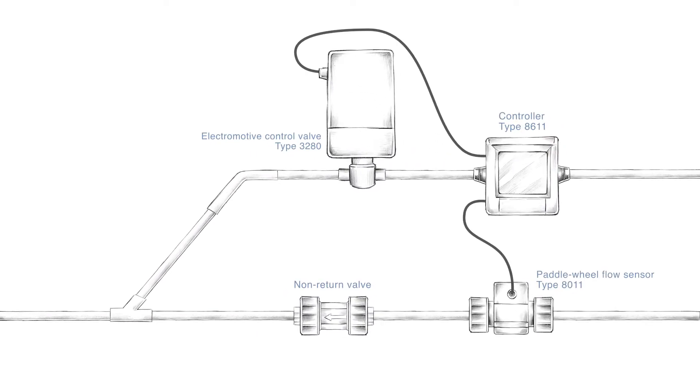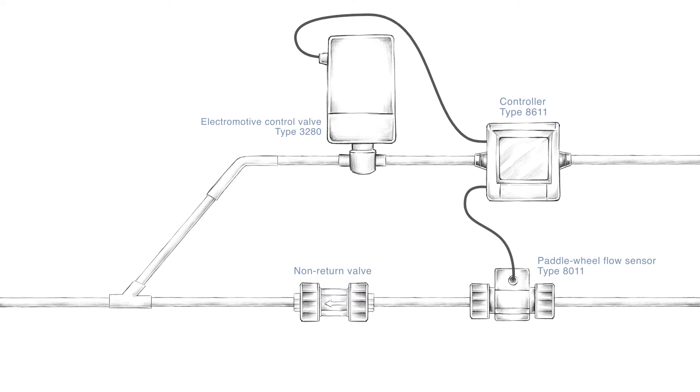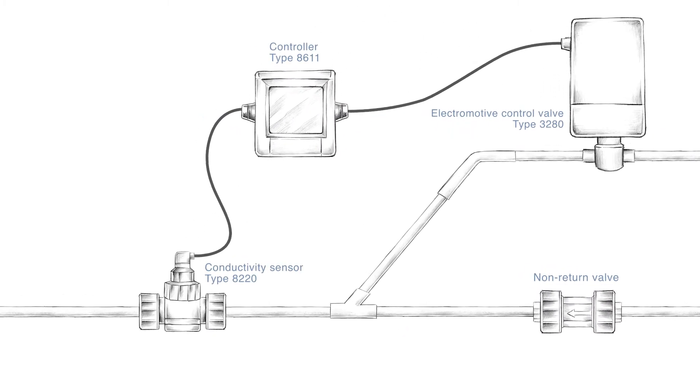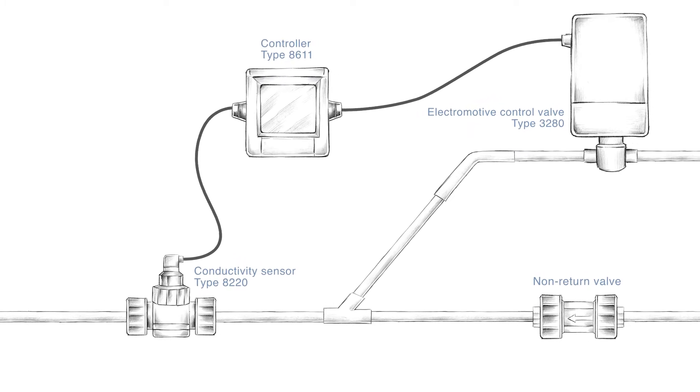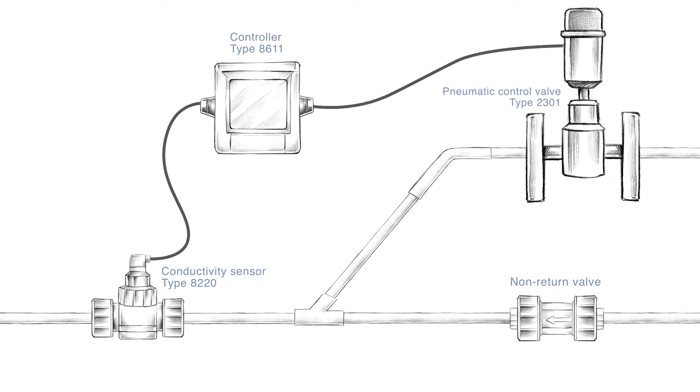Depending on your respective requirements, the piping, the process control, the sensor system and the control valves can be individually configured. Flow or conductivity sensors are used according to the blending principle that applies to the given application. Whether electric or pneumatic, we guarantee precise control with each actuator.